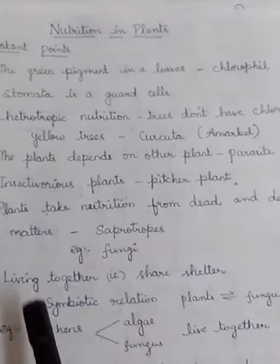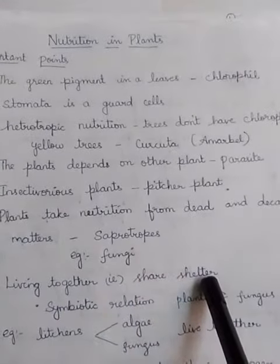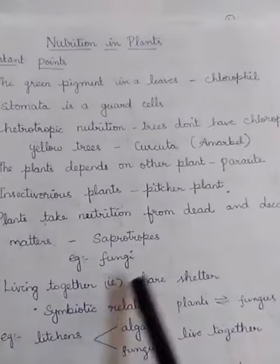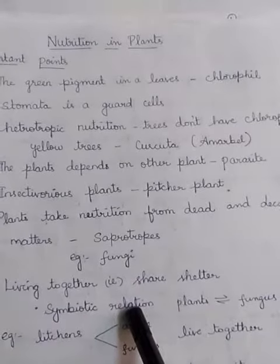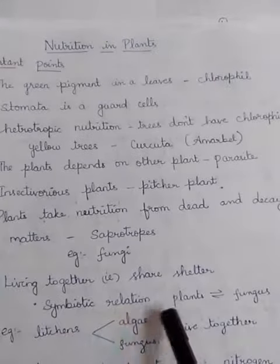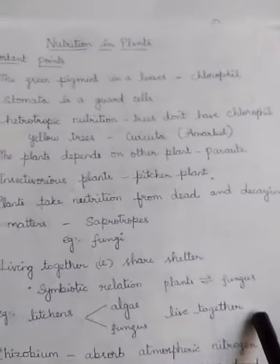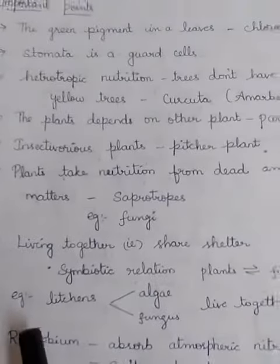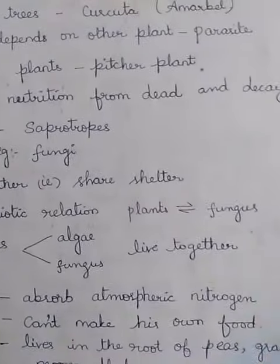Living together — that means sharing shelter and nutrition — is called a symbiotic relationship. An example is lichens, where algae and fungus live together and share nutrition.